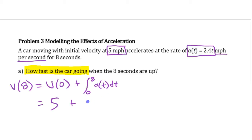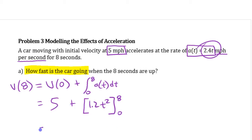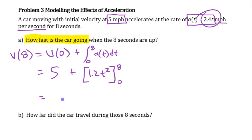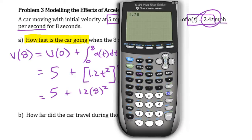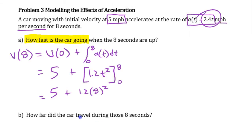So we have five plus this integral. We could do it analytically or on the calculator — this one isn't that hard analytically. We need an antiderivative of 2.4t, which is 1.2t², evaluated at eight and zero. That gives us five plus 1.2 times 64, which is 76.8, so the answer is 81.8 miles per hour.